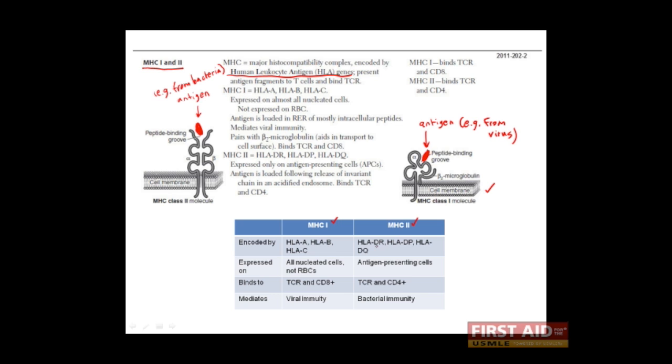And you can remember this because DR, DP, and DQ have two letters. Thus, they encode for class 2 molecules. And of course, A, B, and C are just one letter, and thus encode for class 1.